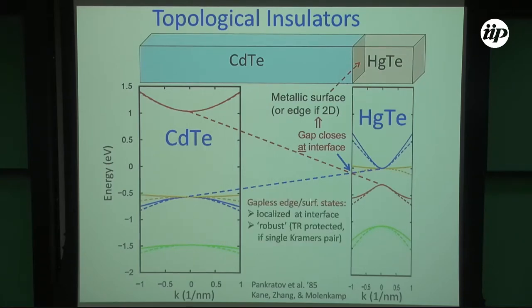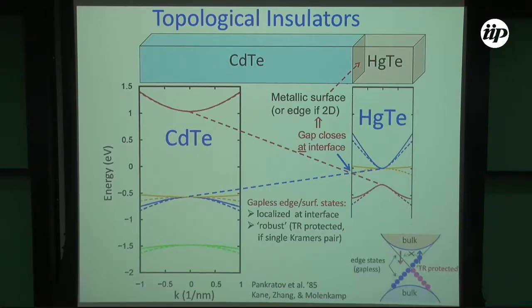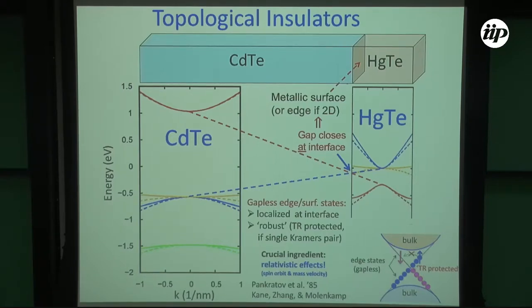This is actually a 3D topological insulator. I'm going to be focusing on what we call 2D topological insulators later on. What happens is that you end up with metallic states that are time-reversal protected, because they are single Kramers pairs. It happens right at the interface. You can ask me later about this, but this inversion is due not only to the spin-orbit interaction, but also the mass-velocity term. That's something that's a bit misleading in the literature — the inversion is not due solely to spin-orbit interaction; the mass velocity plays a very important role.